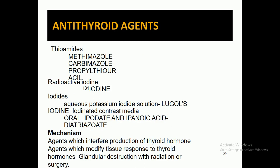Now, the anti-thyroid agents: the first category is thioamides, which include methimazole, carbimazole, and propylthiouracil. The second category is radioactive iodines, including iodide preparations and aqueous potassium iodide solutions.